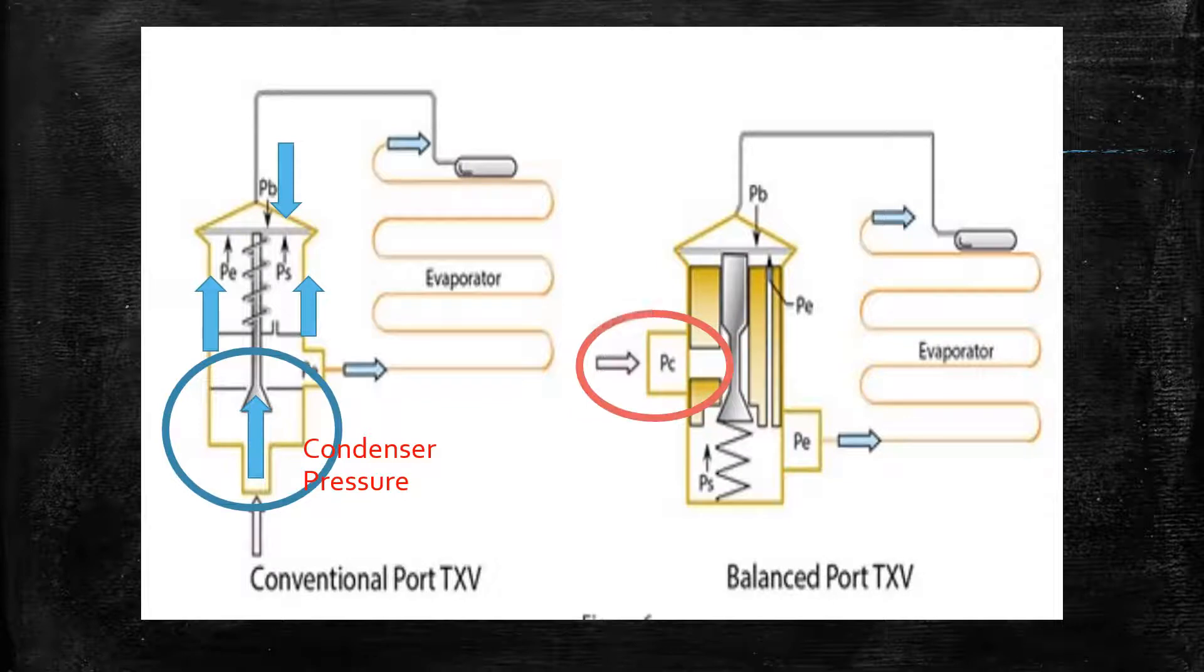On a balanced port TXV, this condenser pressure is isolated from the rest of the valve, and therefore works on the needle in a balanced or equal pressure, not causing any additional pressure on the needle valve to open or close.